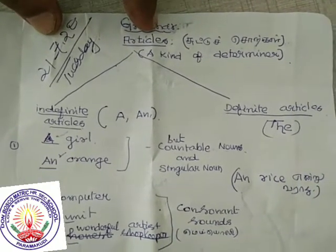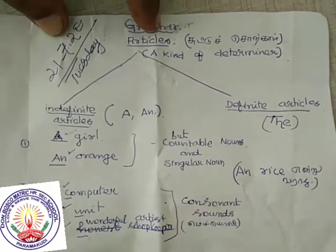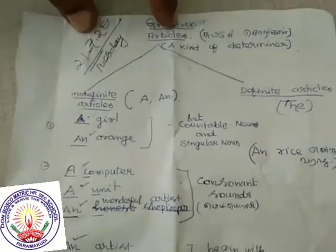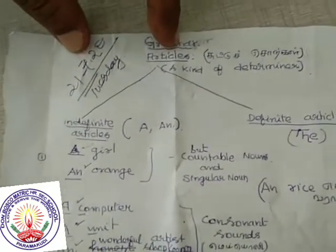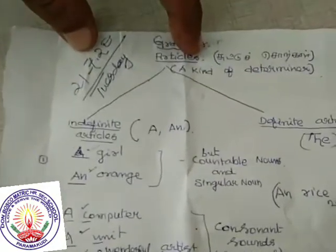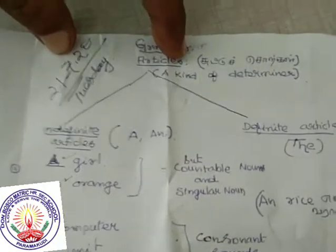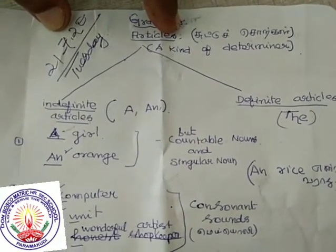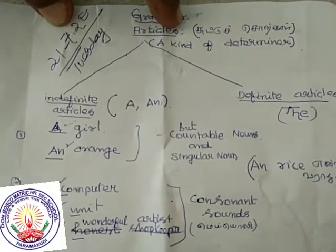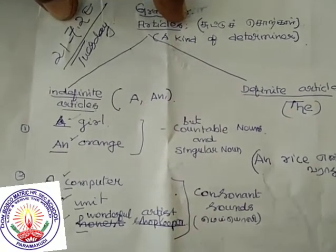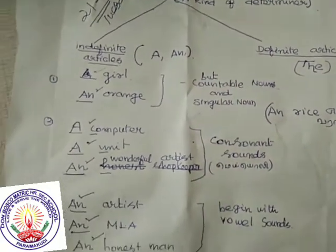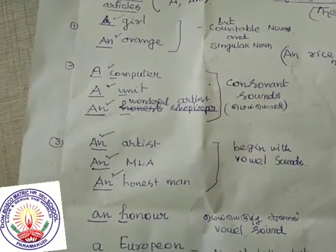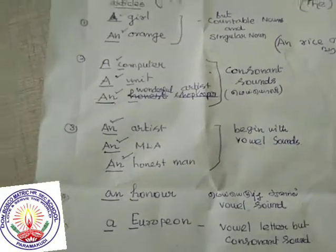Just observe what I say: a girl, an orange, a computer, a unit, a wonderful artist, an artist, an Emily, an honest, an honor, a European. What are they?